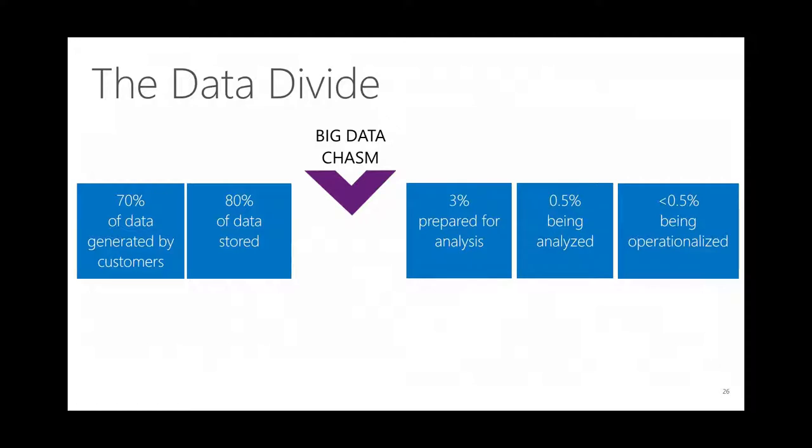Here's the problem — there's a big data divide. We're generating tons of data, a lot generated from customers. If 80% of data is being stored but we're only using 3% or less than 1%, there's a big problem. Sometimes we capture data that's not useful — like one client who was capturing device status repeating 'okay okay okay' every few minutes. But out of that 80%, there's still tons of valuable data just sitting there, never analyzed. The challenge is not only capturing the data but putting it to good use.